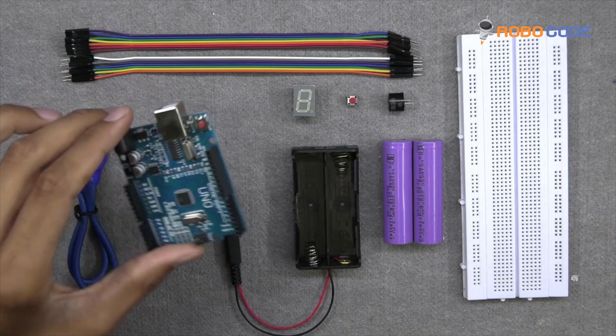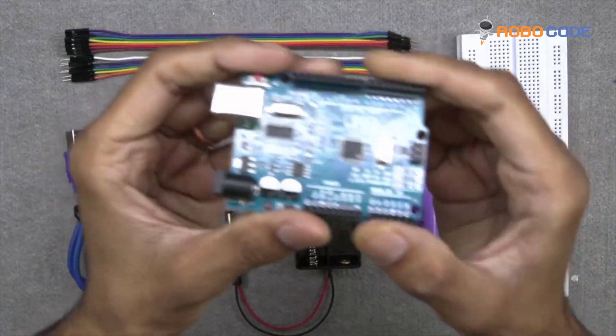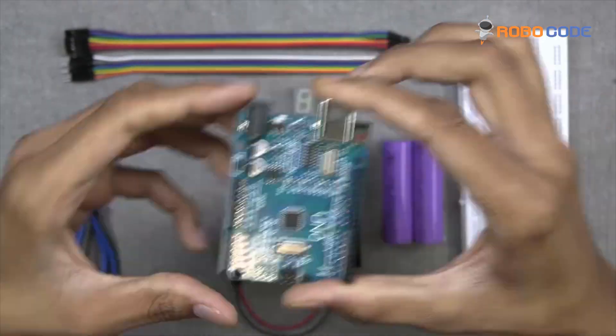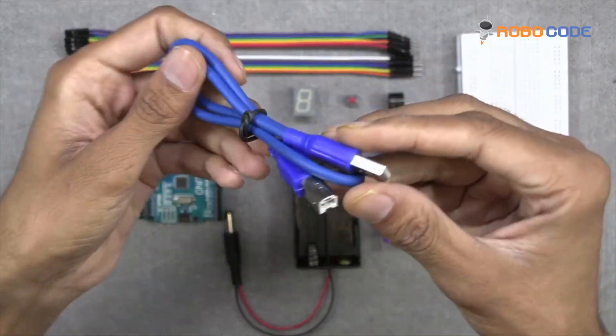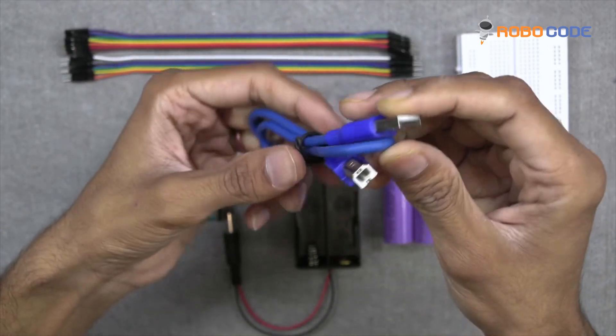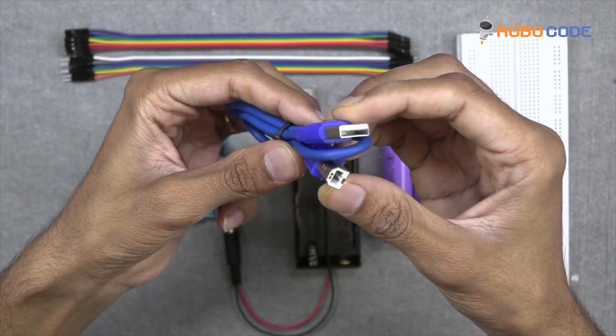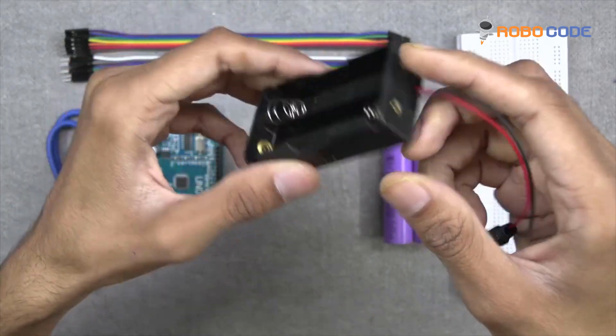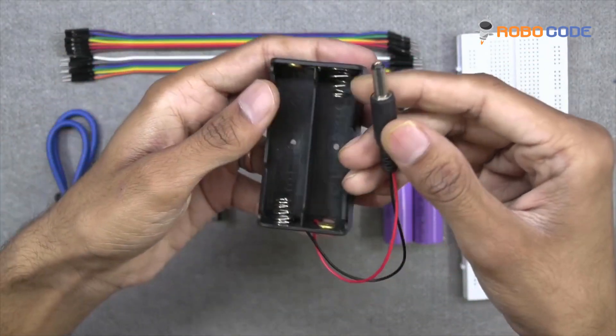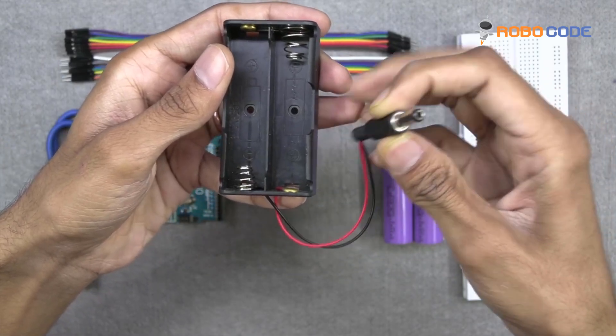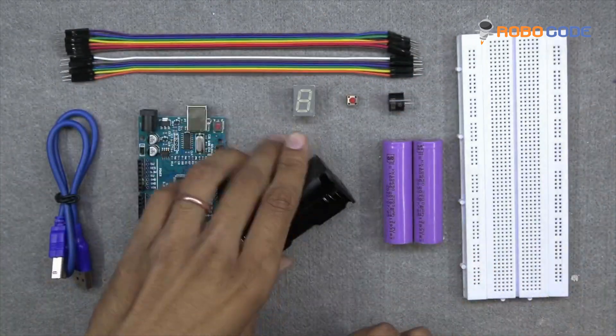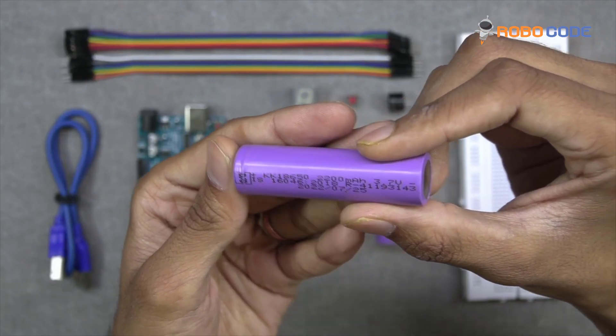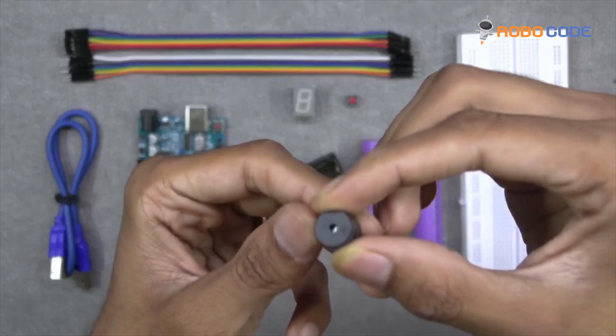We will require one Arduino UNO board as you can see in this video, one USB cable to connect the laptop and upload the code, a battery holder which can connect two batteries, two 3.7V lithium batteries, and one buzzer.